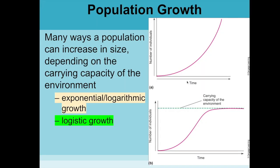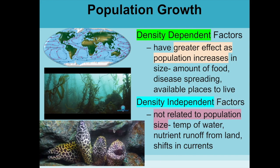Species can grow in different ways. Some grow exponentially, with populations taking off to very large sizes. Others reach a maximum that the environment can support — called the carrying capacity — following logistic growth, which levels off at that limit.